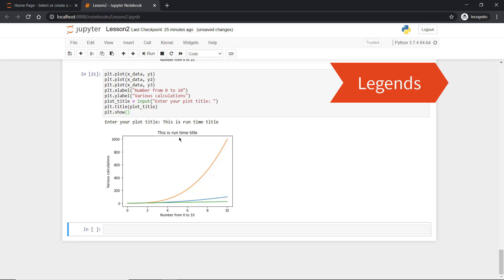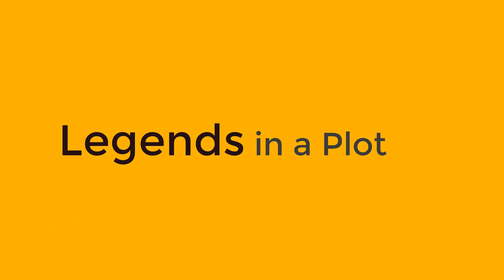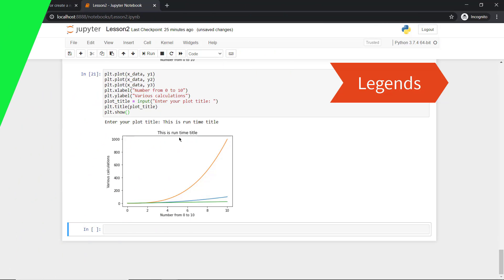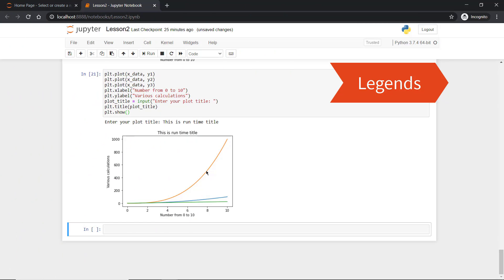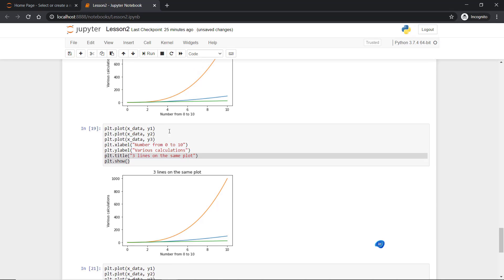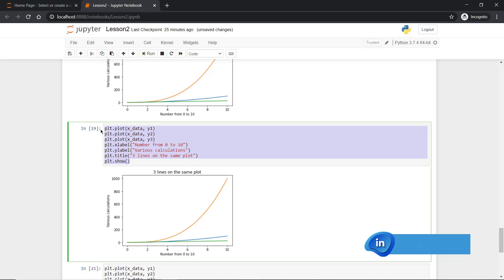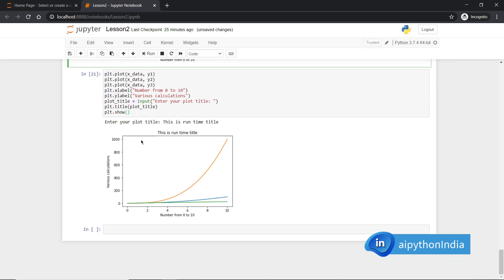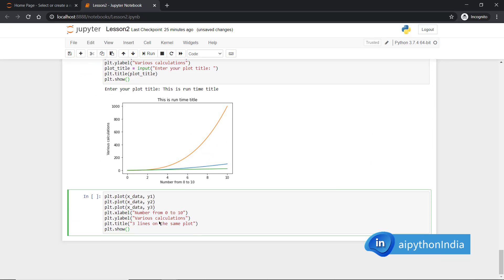So as you know, legends are just to represent what these lines are for. There are two ways of representing a legend on the plot. So the first way is, I will copy this one because I don't want dynamic title every time. I will copy this one, paste it here.